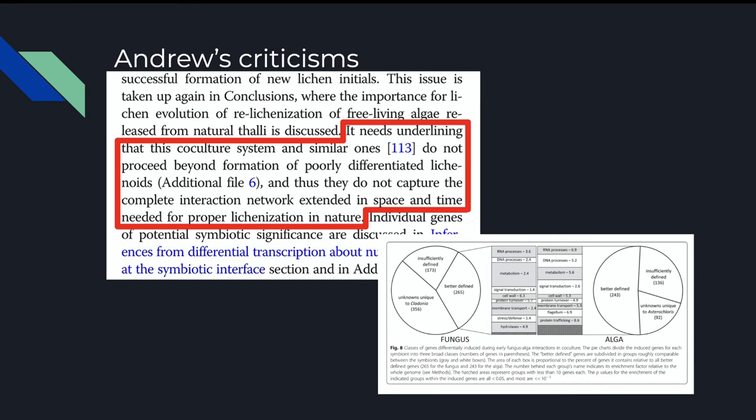So in other words their findings come from a crude model that doesn't accurately describe what occurs in nature. My second criticism is illustrated in figure eight where they discuss upregulated genes occurring in the co-culture. I know that the researchers were limited by what has already been defined in other literature and databases to determine the genes that were upregulated but as you can see here there's a huge proportion of genes that are either designated unknowns or insufficiently defined this leads me to wonder how you could confidently present that the numbers and gene categories from the better defined section are accurate at depicting the transcriptome of each symbiont.